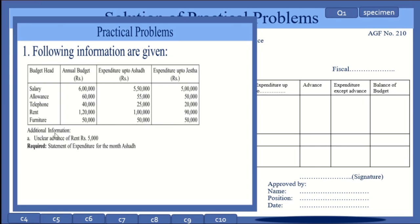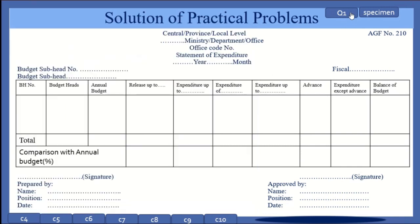In additional information, an unclear advance of rent of rupees 5,000 is given. We have to prepare a statement of expenditure for the month of Ashar. We will do the solution of that question using this specimen.